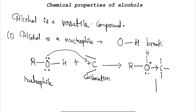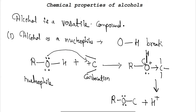Due to the positive charge developed on oxygen, the hydrogen gets expelled out. The electrons are attracted and the hydrogen loses its electron, releasing out as a hydronium ion. The compound formed is RO⁻, and H⁺ is released out — hence here the alcohol is acting as a nucleophile.